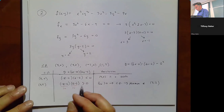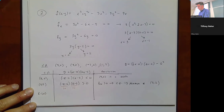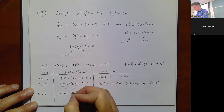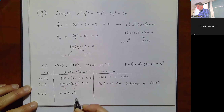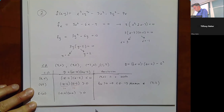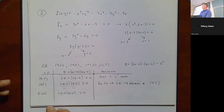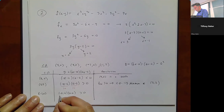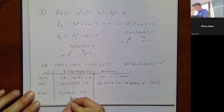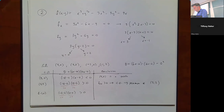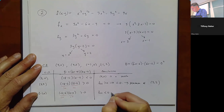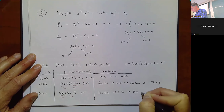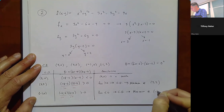At (-1, 0): D = (-6 - 6)(0 - 6) = (-12)(-6), which is positive — a negative times a negative. We check fxx = 6(-1) - 6 = -12, which is negative, meaning concave down. So we have a maximum at (-1, 0).